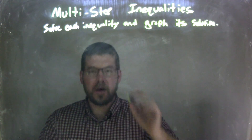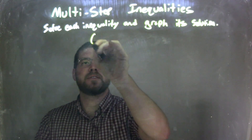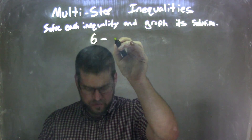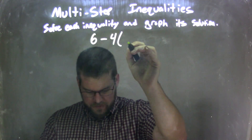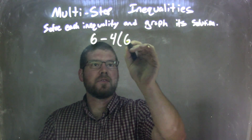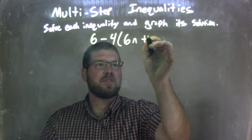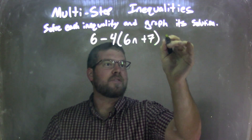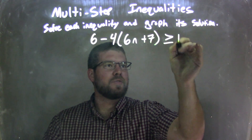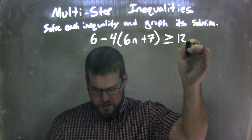So if I was given this inequality: 6 minus 4 times the quantity 6n plus 7, that's greater than or equal to 122.